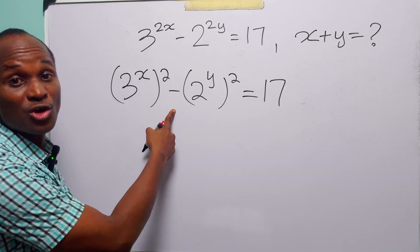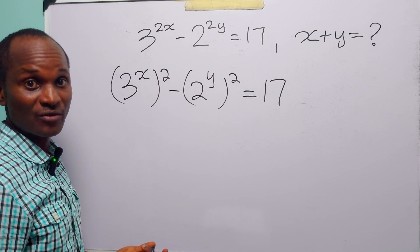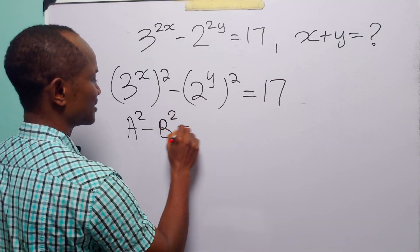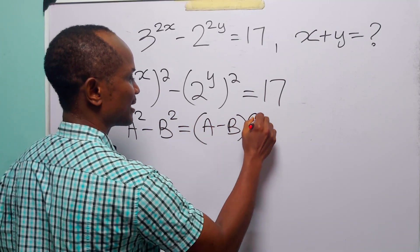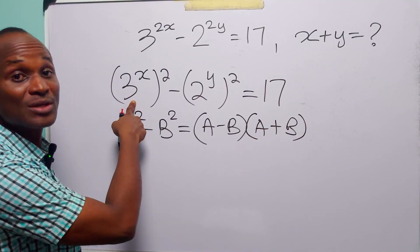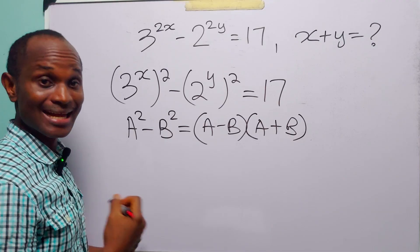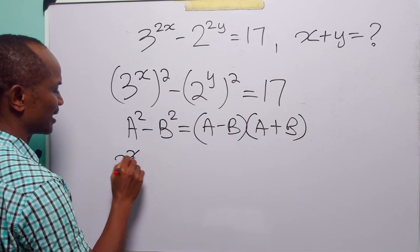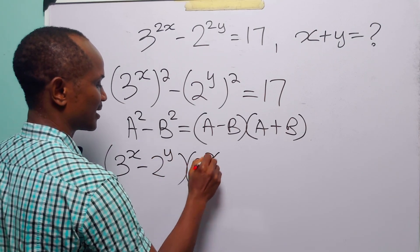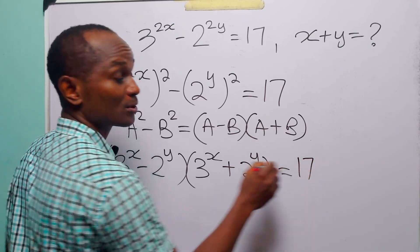With the original equation written in this form, you are going to see the difference of two squares. We know that a squared minus b squared equals (a minus b)(a plus b). So if a is 3 to the power x and b is 2 to the power y, we can factorize the left-hand side as (3^x minus 2^y)(3^x plus 2^y), and this is still equal to 17.